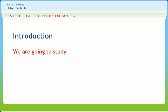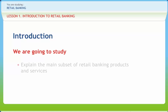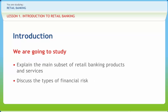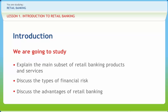Services offered comprise savings and checking accounts, mortgages, personal loans, debit cards, credit cards, and so on. In this lesson, we will explain the main subset of retail banking products and services, discuss the types of financial risk, and discuss the advantages of retail banking.